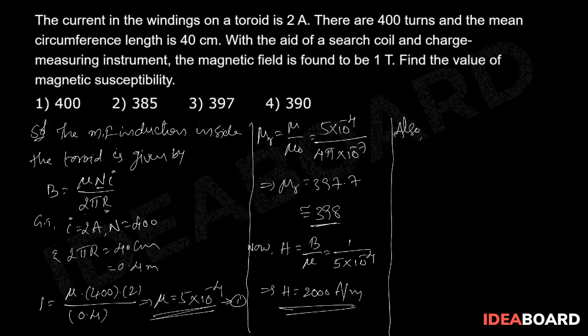Also the intensity of that magnetization is simply given by total magnetic field induction by mu 0 minus H. Now from this I equal to B value 1, mu 0 value that is 4 pi into 10 power minus 7 minus intensity of magnetizing field 2000.